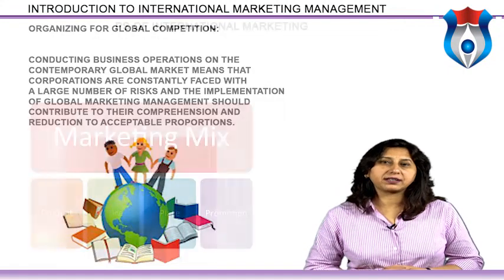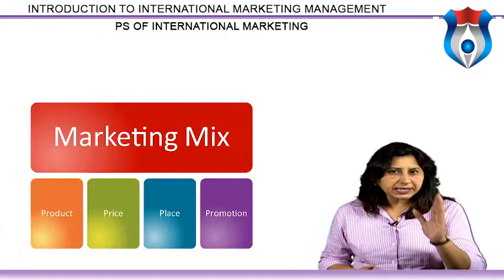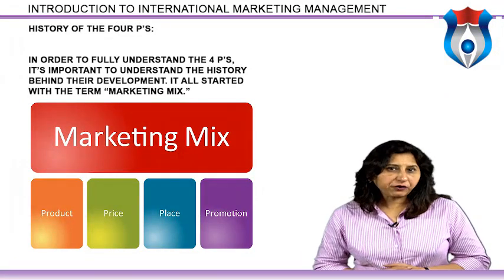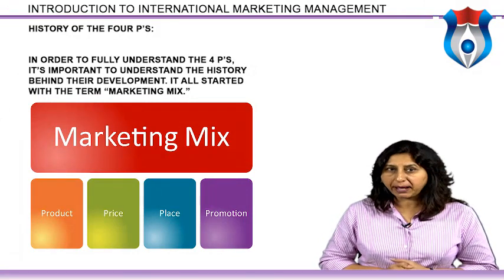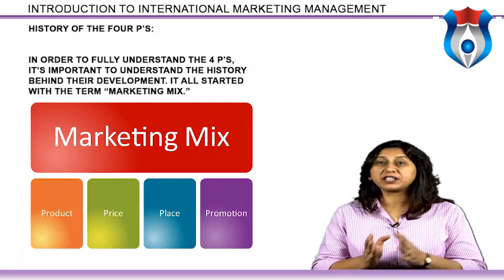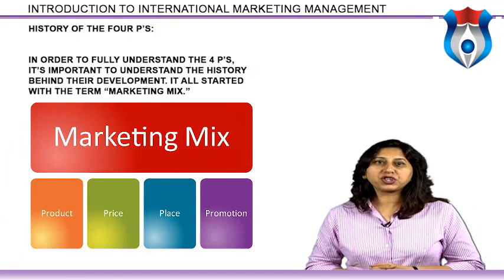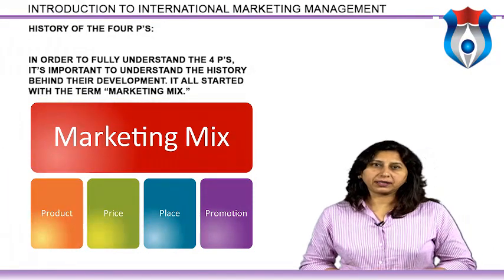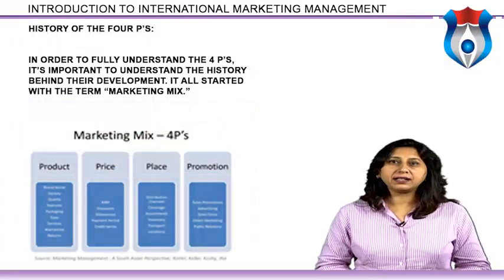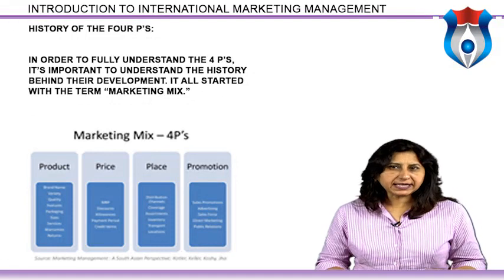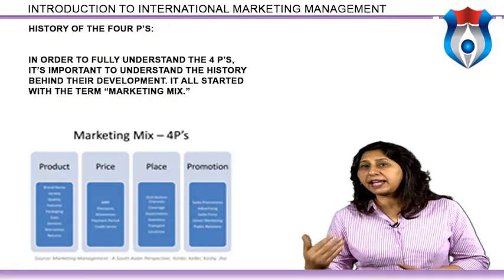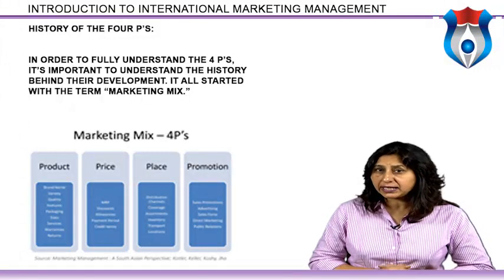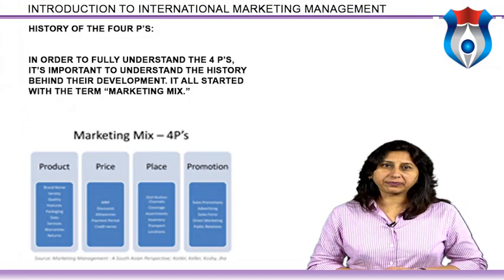To fully understand the four Ps, it is important to understand their history. In the 1940s, James Culleton described the position of marketing manager as someone who is a 'mixer of ingredients.' More than a decade later, Neil H. Borden published the concept of the marketing mix, an adaptation of Culleton's theory. The marketing mix included product, pricing, planning, branding, distribution channels, advertising, promotions, personal selling, packaging, display, servicing, physical handling, and fact-finding. It wasn't until E. Jerome McCarthy grouped each aspect into four categories — the four Ps of marketing.